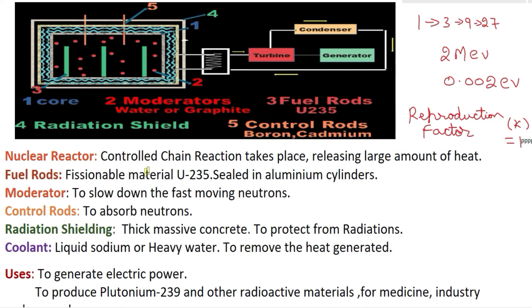Now let us look at the uses of the nuclear reactor. The nuclear reactor is used to generate electric power. It is also used to produce fissionable materials like plutonium-239 and other radioactive materials, which are used in the fields of medicine and industry.